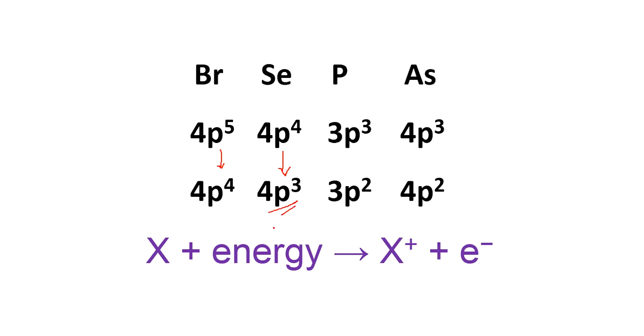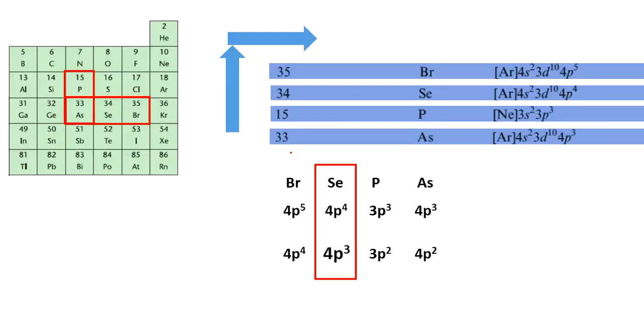That is 4p3, half-filled configuration. Half-filled is stable. So for selenium, the ionization energy will be the lowest. So the answer to our question is selenium.